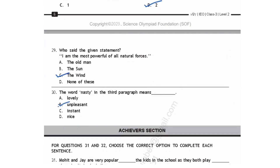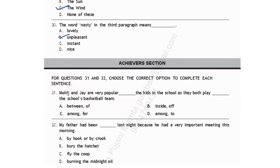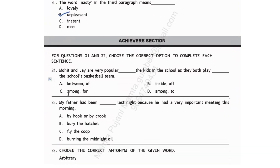Now let's go to the last section: the Achiever section. Please be careful while attempting this section, as it fetches you more marks. For questions 31 and 32, choose the correct option. Mohit and Jay are very popular among the kids in the school as they both play for the school's basketball team. Option C: among the kids in the school as they both play for the school's basketball team.